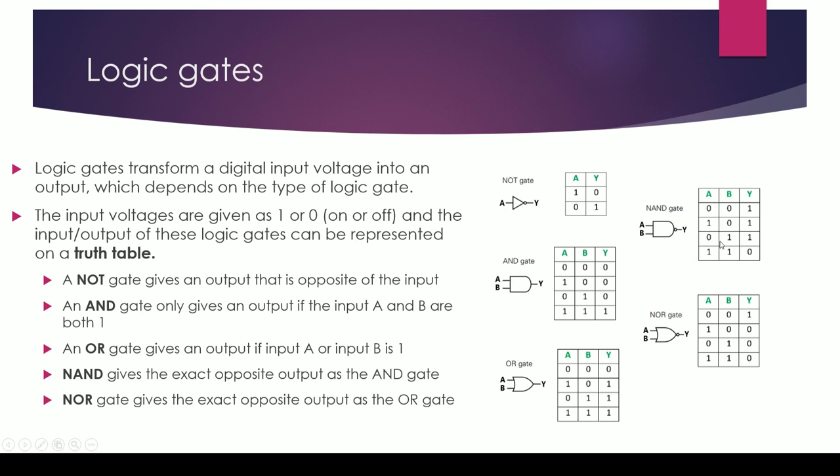So if you have the inputs of A and B being both 1, that's when you get no output for a NAND gate. But in any other situation you'll actually get an output, as you can see in the truth table.